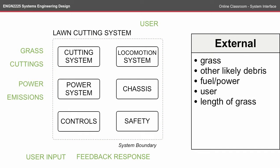The next step is to identify the external entities that will affect what happens inside the system boundary. Here I've identified the user, the grass, the cuttings, the power, emissions, user input, and feedback response.